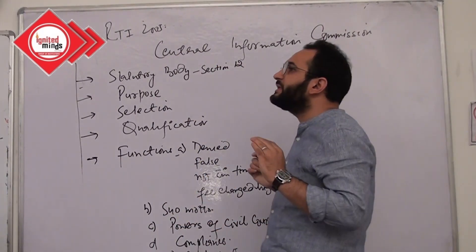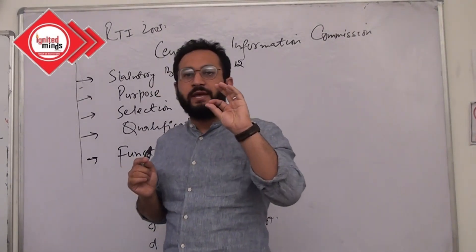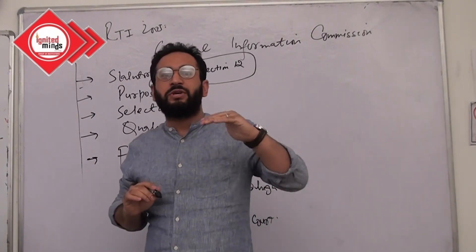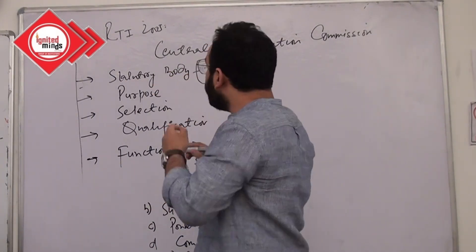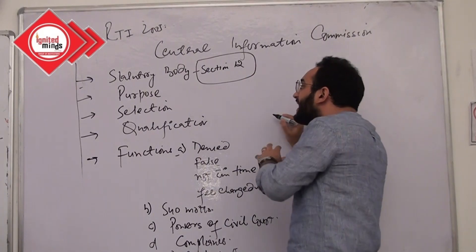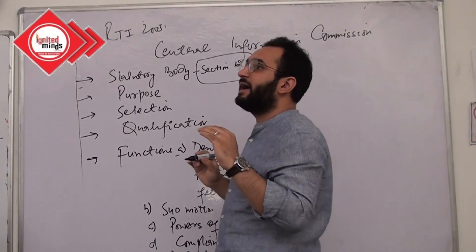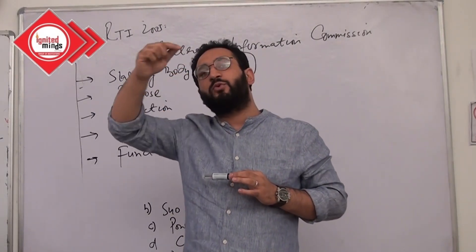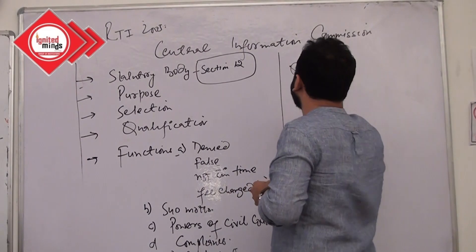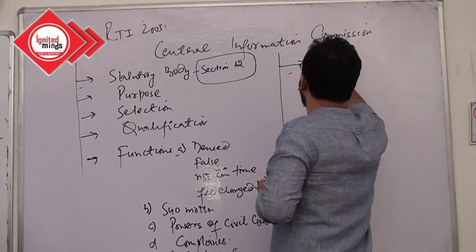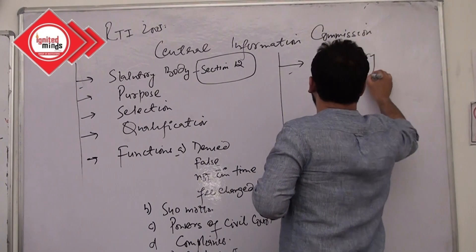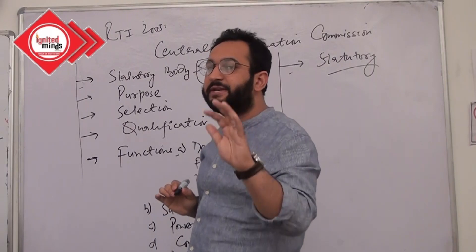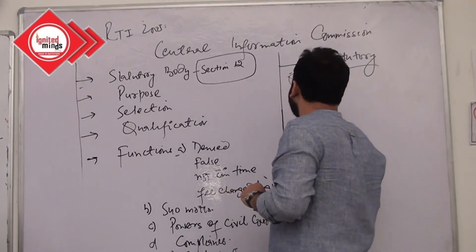The Central Information Commission is actually created within the RTI itself — that is Section 12. Section 12 says there shall be a commission at the national level made under the provisions of the act. This commission will oversee the working of this particular legislation throughout India. Since it has been made by the RTI Act itself, it is a statutory body.